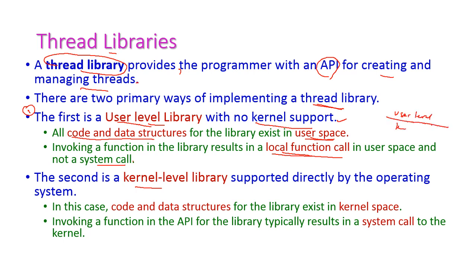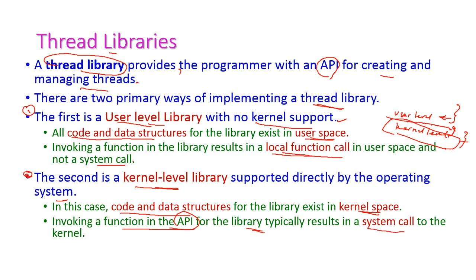The thread is created only in the user level area and executes only there, so there is no interaction with the kernel. The second type is the kernel-level library, which is supported directly by the operating system because the thread is created at the kernel level. The code and data structures exist in kernel space, and invoking a function in its API typically results in a system call to the kernel. In contrast, the user-level library uses only a simple local function call.